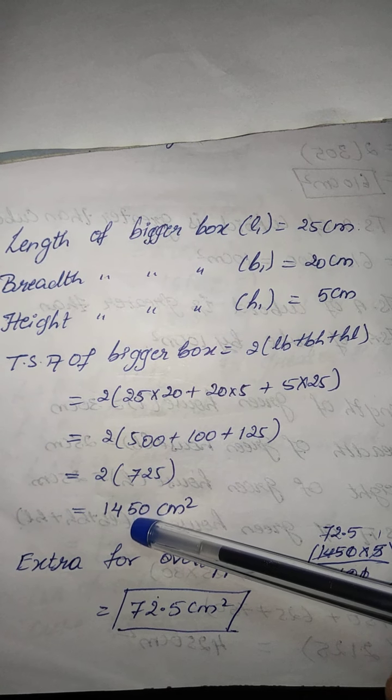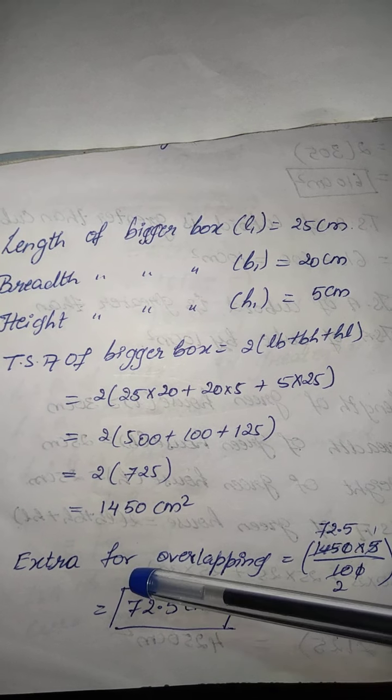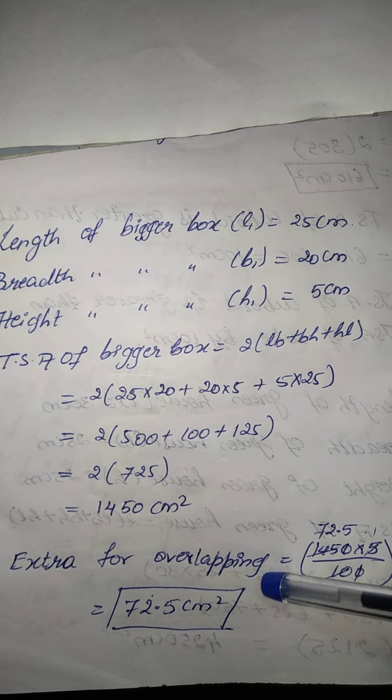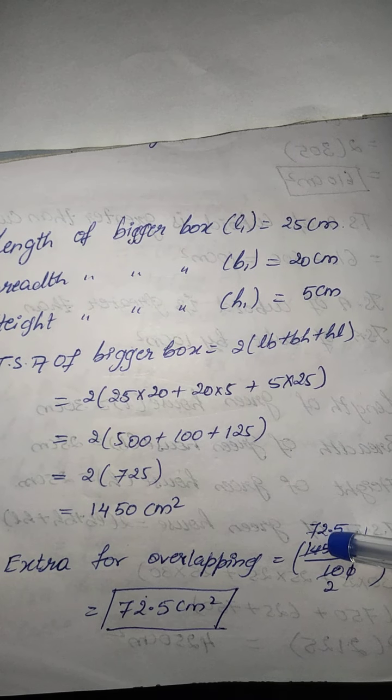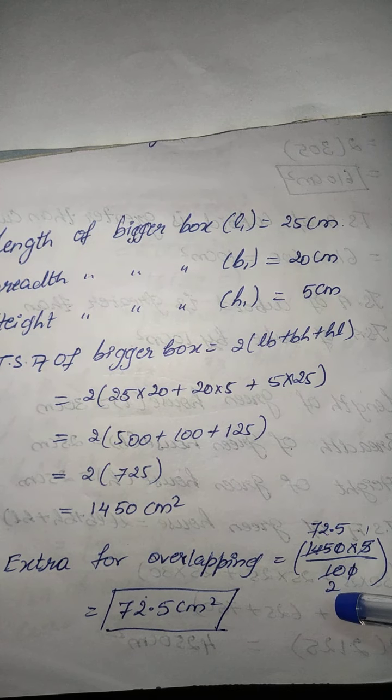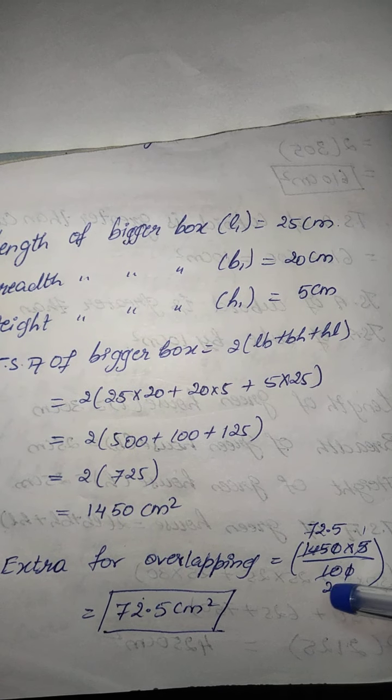And finally, multiplying with 2, I will get 1450. Extra for overlapping is been 5 percent. 5 percent means 5 divided by 100. 0, 0 gets cancelled, 5, 2, 0, 5, 72.5. Next 5, 1, 0, 5, 2, 0.